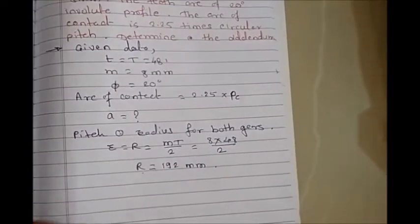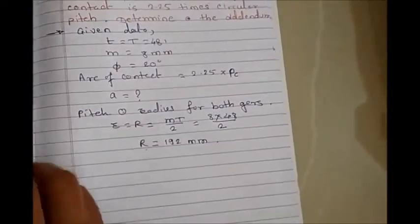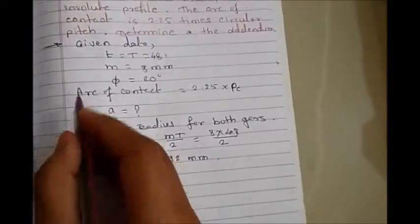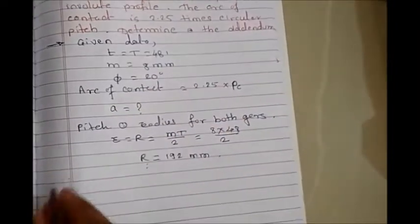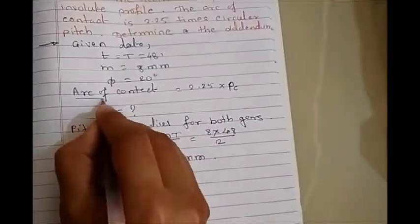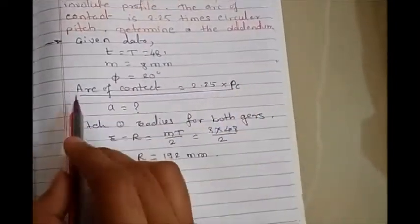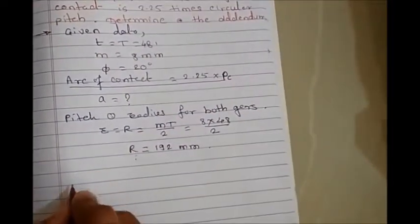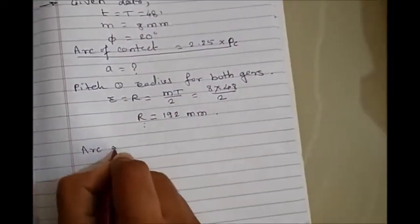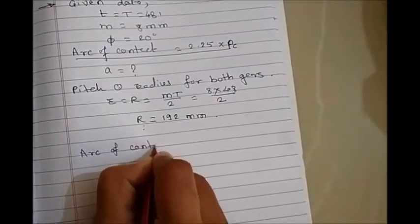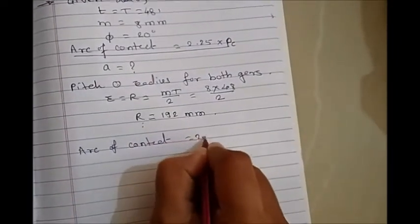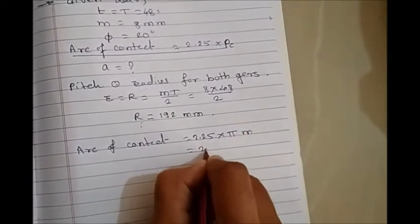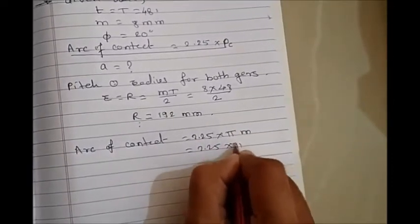We don't know Ra, the radius of addendum circle. To calculate Ra, we're going to use the formula of length of path of contact. But before that, we must know about the length of path of contact. Here is the statement: arc of contact equals 2.25 times Pc.